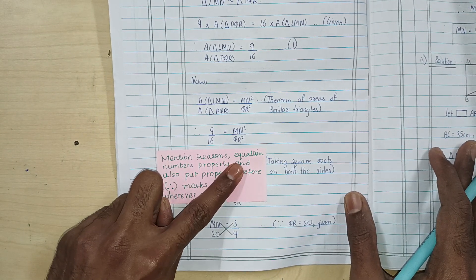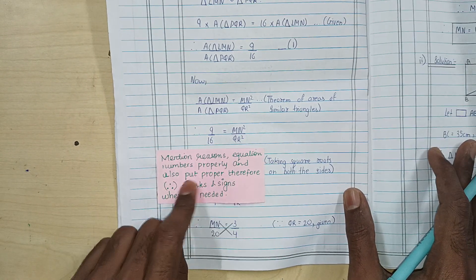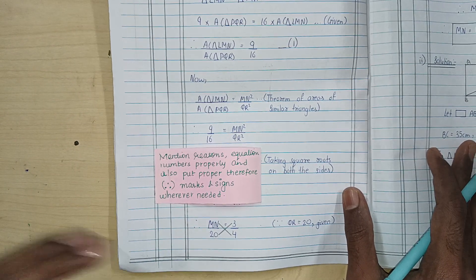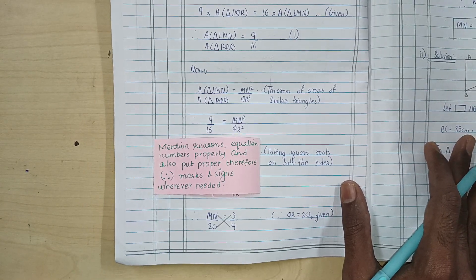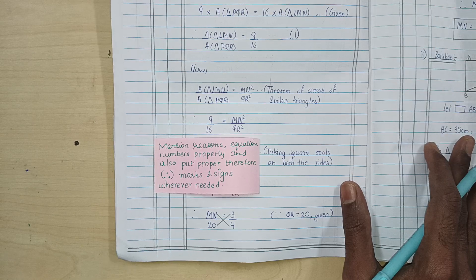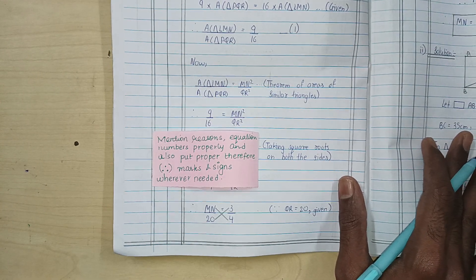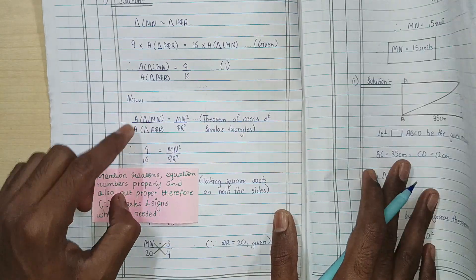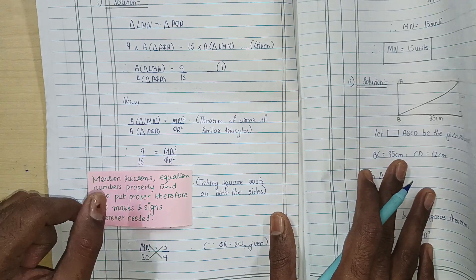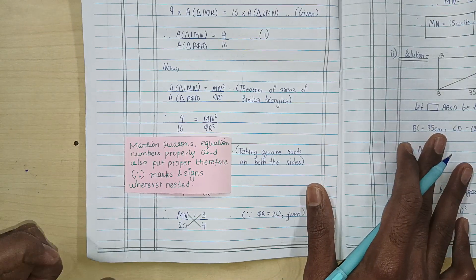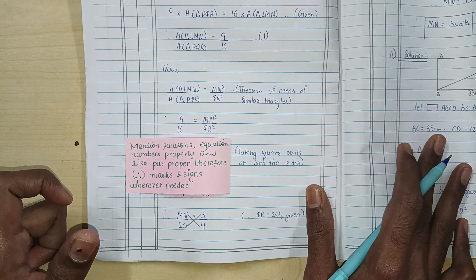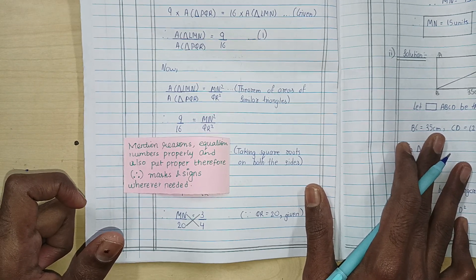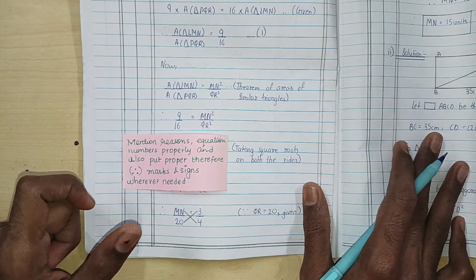Mention reasons and equation numbers properly, and also put proper 'therefore' and 'since' marks and signs whenever needed. All these things can cost you marks — if these things are missing out during the final check, you will definitely have marks cut.